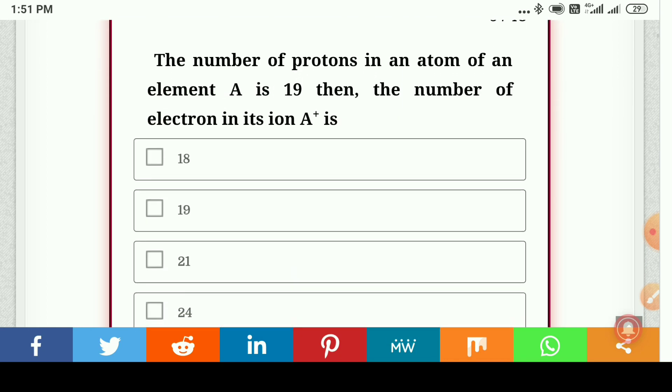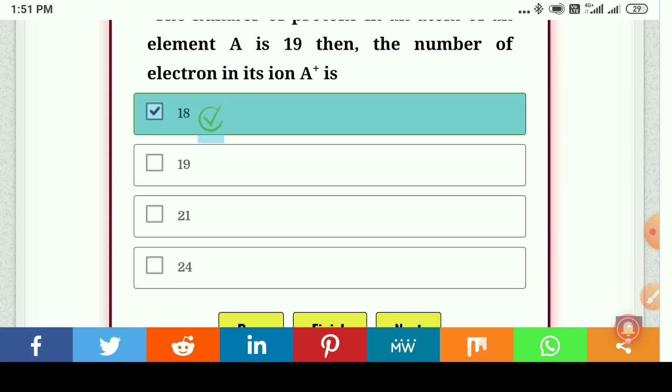The number of protons in atom of an element A is 19. Then the number of electrons in its ion A+ is... so here the correct answer is 18.